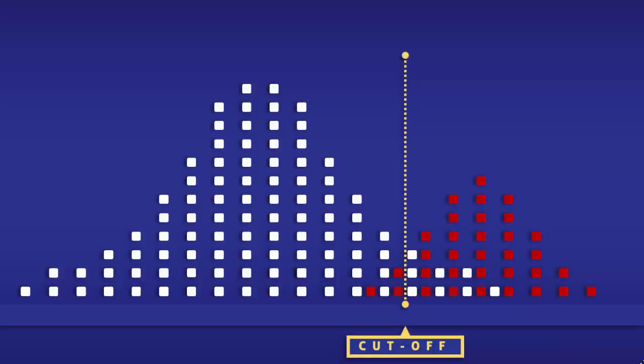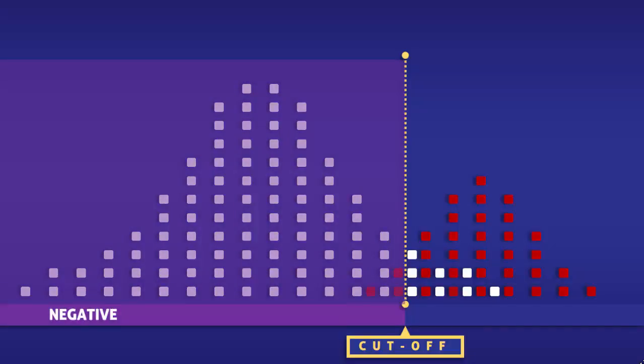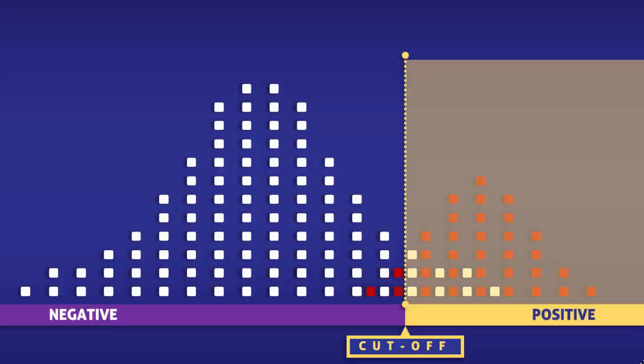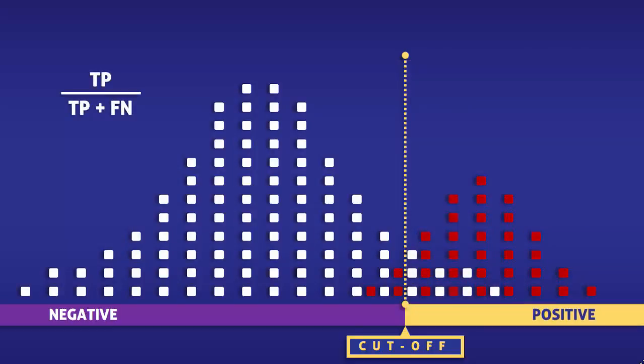This yellow line represents a cutoff level for a test. To the left of the line, the test turns negative, and to the right, it returns positive. Since sensitivity only takes into consideration people that have the condition, we are going to focus on the red squares.